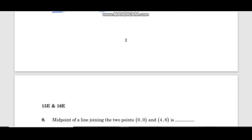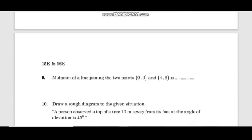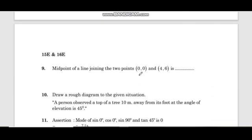Midpoint of a line joining two points (0, 0) and (4, 6) is found using the formula (x1 plus x2 by 2, y1 plus y2 by 2), which gives (4 by 2, 6 by 2), that is (2, 3).